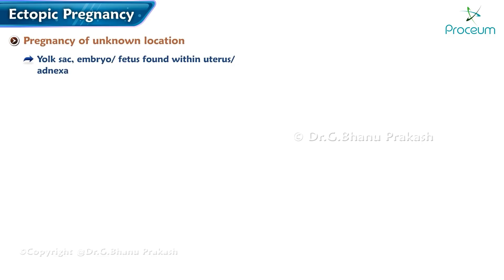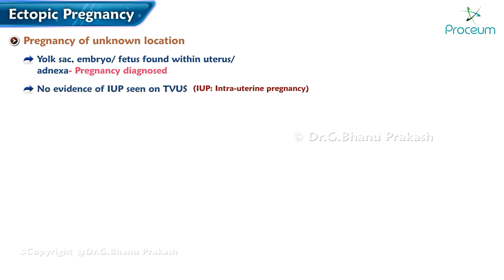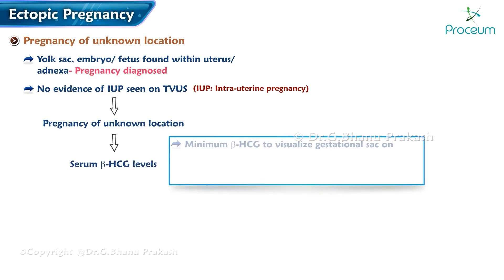Caution: vaginal examination may precipitate more hemorrhage due to manipulation. Pregnancy of unknown location: if a yolk sac, embryo, or fetus is found within the uterus or adnexa, a diagnosis is made. However, if no evidence of intrauterine pregnancy is seen on transvaginal scan, the diagnosis is a pregnancy of unknown location, and serum beta-hCG should be assessed.